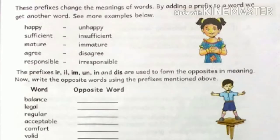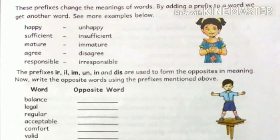These prefixes change the meaning of words. By adding a prefix to a word, we get another word. See more examples below: happy → unhappy, sufficient → insufficient, mature → immature, agree → disagree, responsible → irresponsible. The prefixes IR, IL, IM, UN, IN, and DIS are used to form the opposite in meaning.